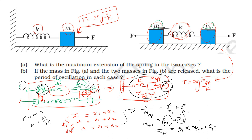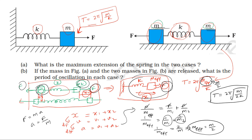Substituting the effective mass m by 2, the time period for the second case is 2π times the square root of m by 2k. So the first case time period is 2π root of m by k, and the second case time period is 2π root of m by 2k.